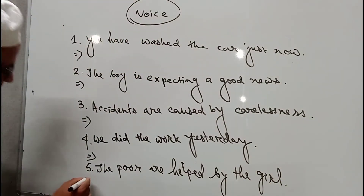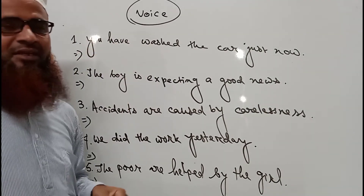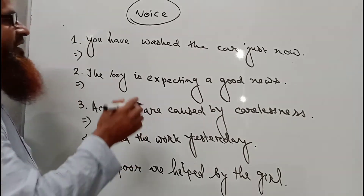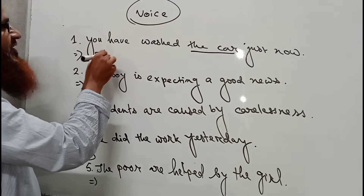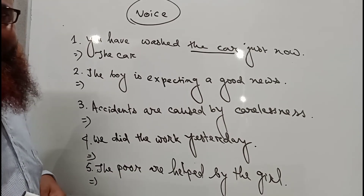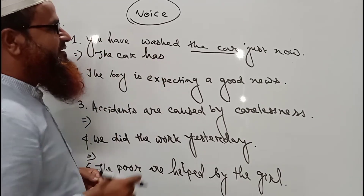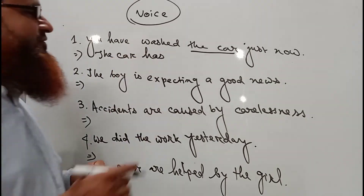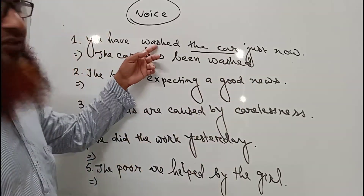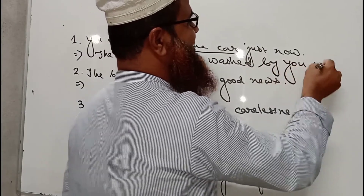Here I have written five sentences of five different tenses. Number one: 'You have washed the cart just now' is in present perfect tense and active voice. The object is 'the cart', which becomes the subject. Since the subject 'cart' is third person singular, we use 'has'. So: 'The cart has been washed by you just now.' This is the passive voice sentence.